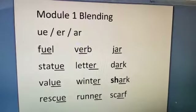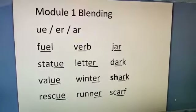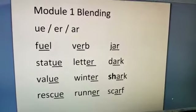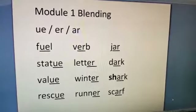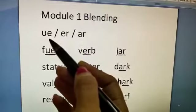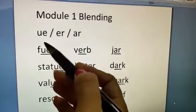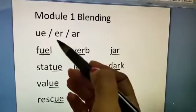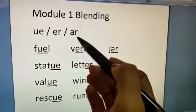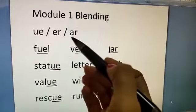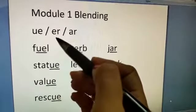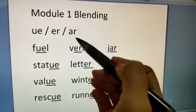Welcome back to Module 1 Blending. Today we are going to learn how to blend a few digraphs. U-E put together is U. E-R put together is ER. A-R put together is R. So U-R-R.